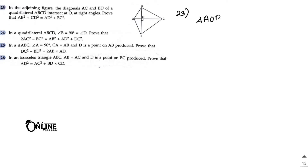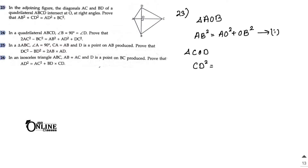From triangle AOB, which is a right angle triangle, you can write down AB² = AO² + OB² — call this equation number 1, by Pythagoras theorem. From triangle COD, which is also a right angle triangle, CD² = OD² + OC² — call this equation number 2.